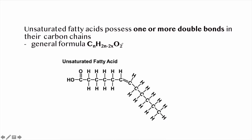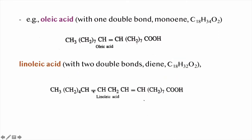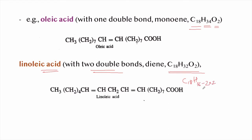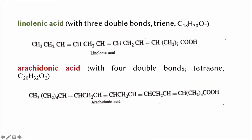Unsaturated fatty acids possess one or more double bonds in their carbon chains. The general formula is CnH(2n−2x)O2, where x is the number of double bonds. Examples include: oleic acid with one double bond (C18H34O2), linoleic acid with two double bonds (C18H32O2), linolenic acid with three double bonds, and arachidonic acid with four double bonds.